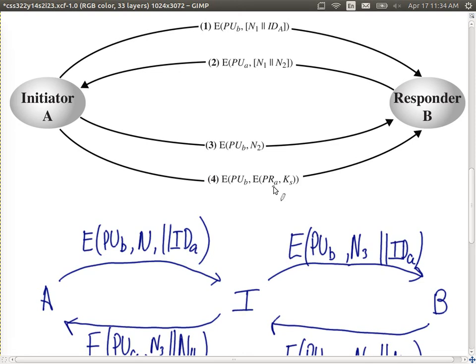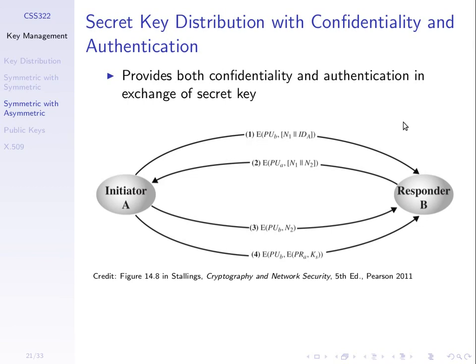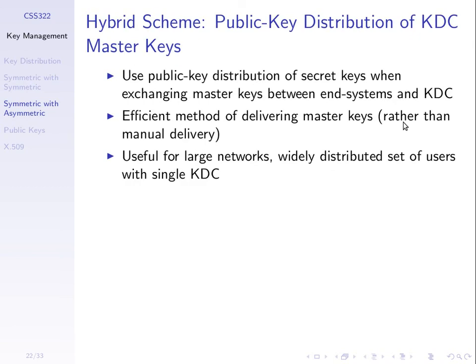The fourth message: B checks it came from A using P-U-A to decrypt the inner part, and confirms confidentiality using P-R-B to decrypt the outer part. This is a more complex way to exchange session keys using public key cryptography, with no third party involved — only the entities that are communicating.